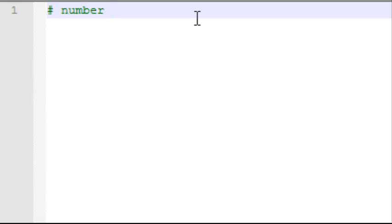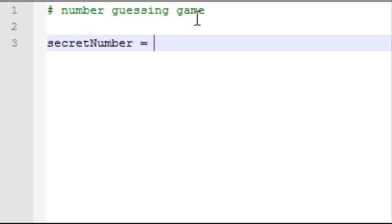So first let's put a comment that explains what this program is. Now the first thing we need to do is create a random number. So we'll call this secret number. And we're going to assign secret number a random number from 1 to 100.